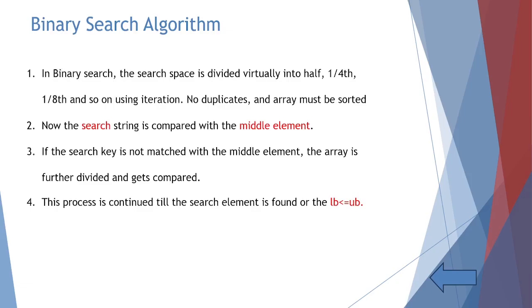We already know the binary search algorithm. In the previous video I have explained, just to be a recalling. In binary search, the search space is divided virtually into half, one-fourth, one-by-eighth and so on using iteration. No duplicates allowed and array must be sorted. Now the search string is compared with the middle element. If the search key is not matched with the middle element, the array is further divided and gets compared. This process is continued till the search element is found or LB less than equal to UB is not satisfied.